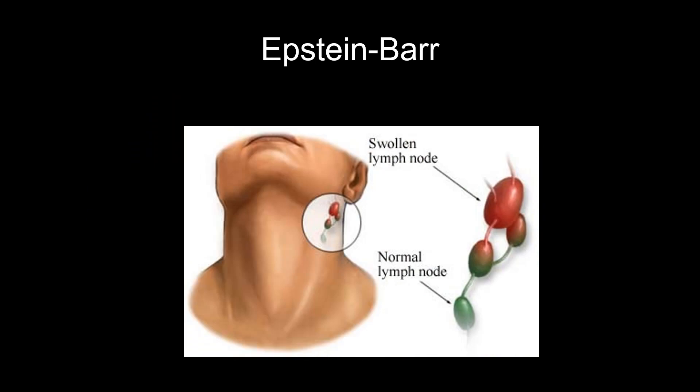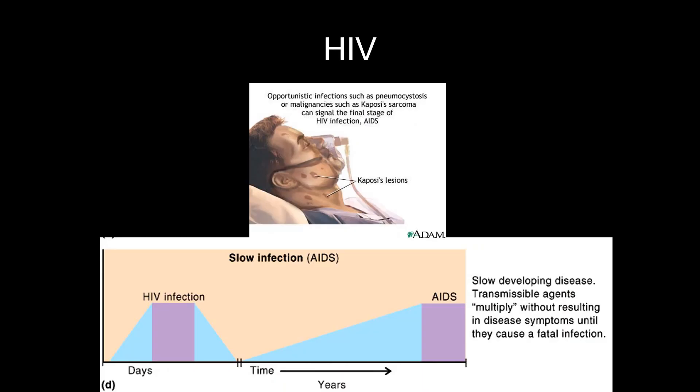Epstein-Barr is a latent infection that infects B cells, one of your types of lymphocytes. The disease it causes the first time around is mononucleosis (mono). Importantly, it increases your risk of Burkitt's lymphoma — a specific type of cancer — so having mono earlier in life raises your risk of that lymphoma later. There's no vaccine for Epstein-Barr.